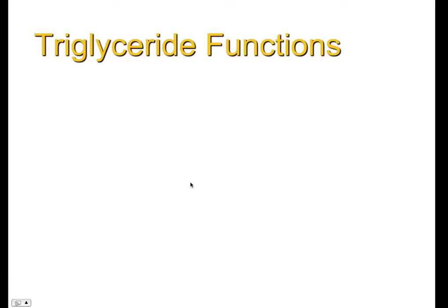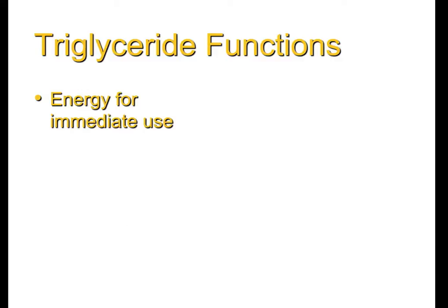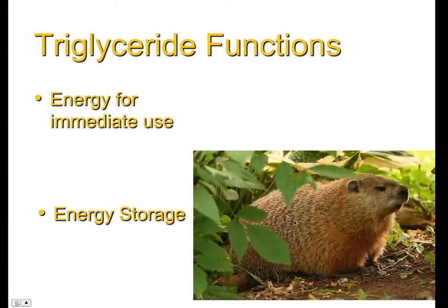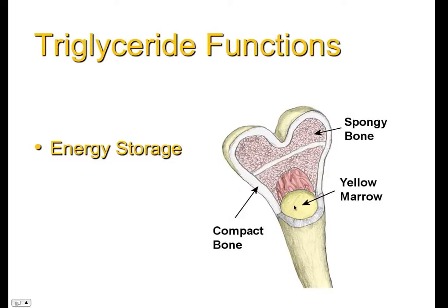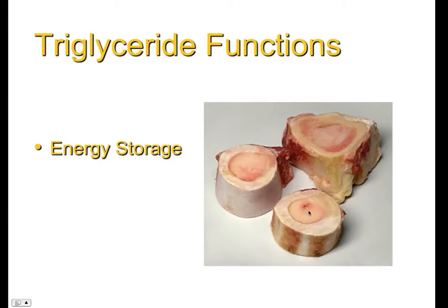So now we get down to the functions, and we've talked about some of these already. Probably the most important is that triglycerides can be used immediately for energy — you can eat some fat and your body breaks it down through cellular respiration to get energy. The other thing has to do with energy storage. Think of a woodchuck eating a lot before winter and storing fat on its body, then using it while hibernating. We also store fat in our bones — in the center of your bones there's yellow marrow, which is essentially fat deposits. You can tell a lot about animals that starved: if the marrow is depleted, they used up their energy store.